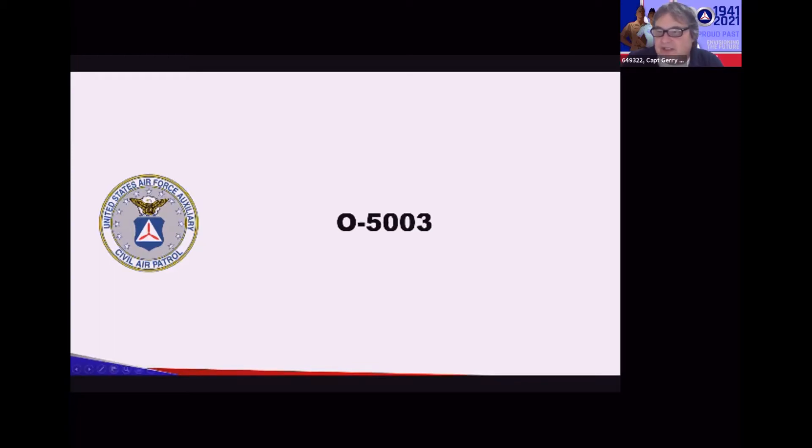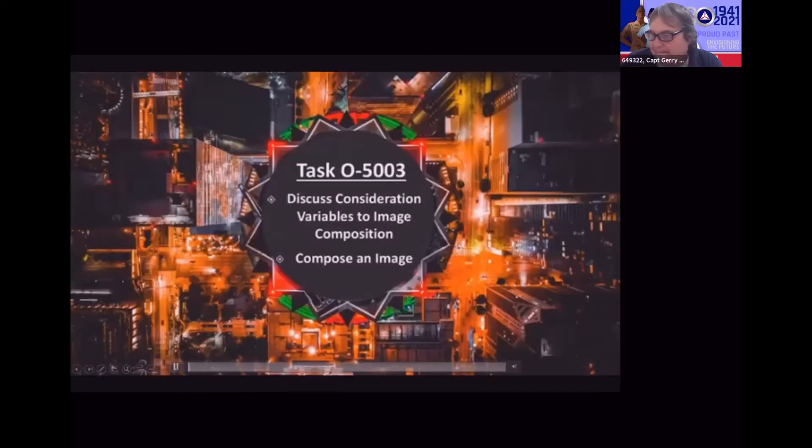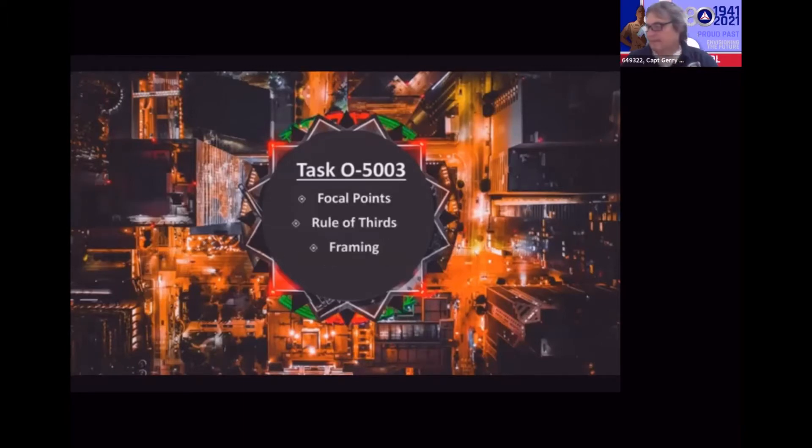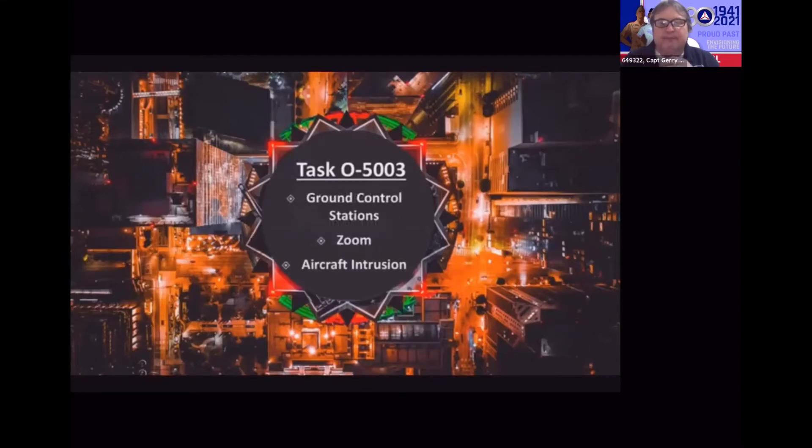Welcome to task O-5003 from the Civil Air Patrol's SUAS task guide. We'll be learning how to compose SUAS imagery to CAP standards. In order to do that we need to discuss focal points, rule of thirds, framing, ground control stations, zoom differences between digital and optical, and aircraft intrusion which give you practical solutions to keep aircraft propellers and landing gear from intruding on your shots.